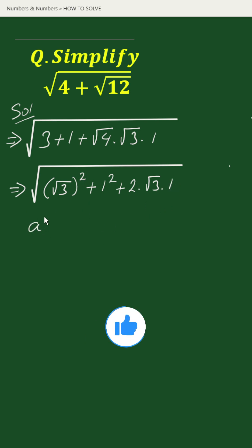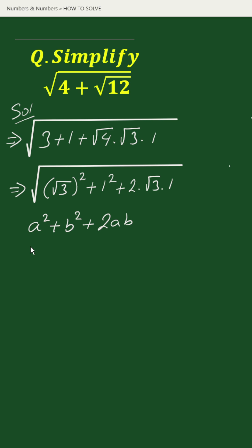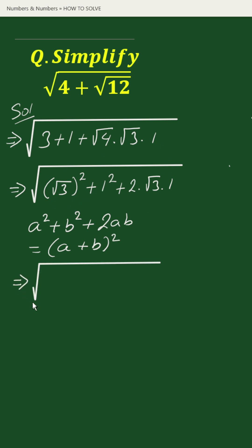...a square plus b square plus 2ab equals to a plus b whole square. So we can write this as square root of (square root of 3 plus 1) whole square.